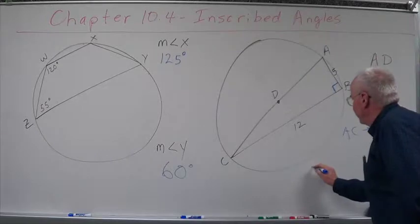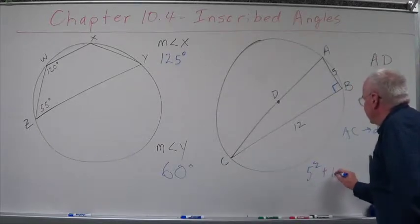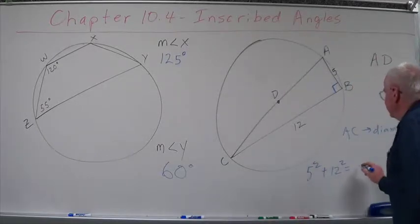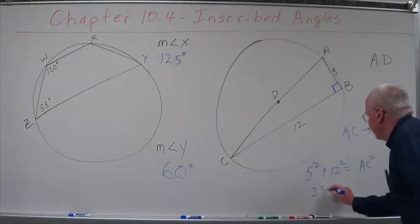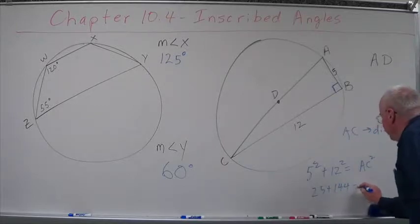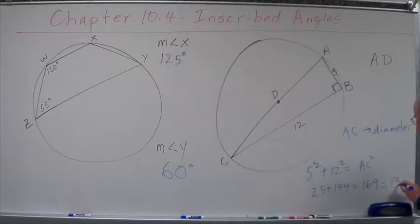We have the two legs, therefore 5 squared plus 12 squared equals AC squared. So that's 25 plus 144 equals 169 equals 13.